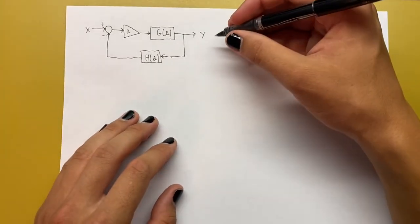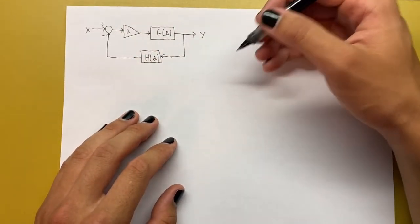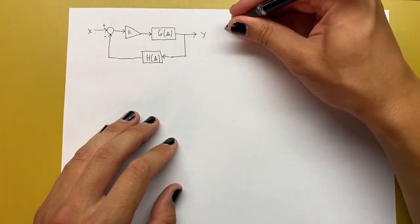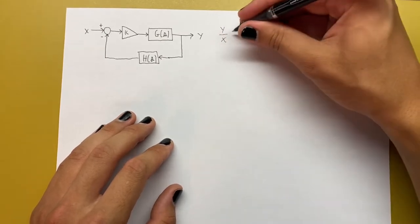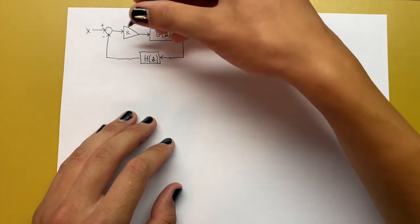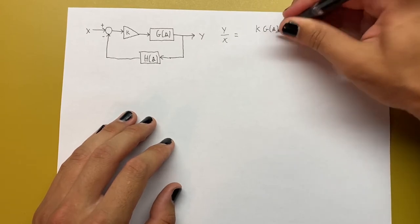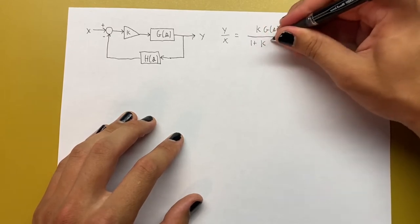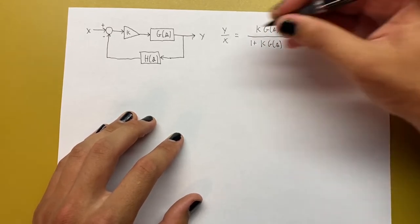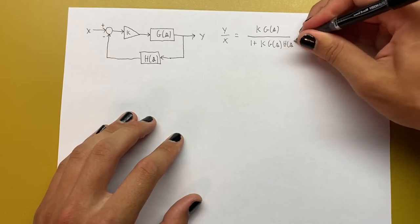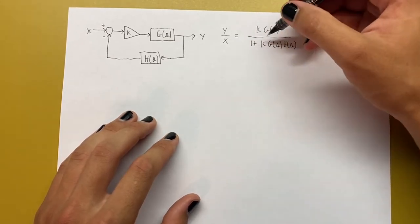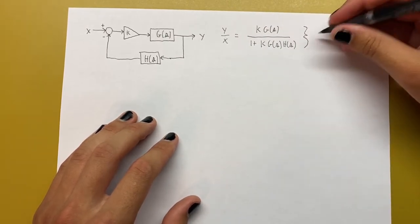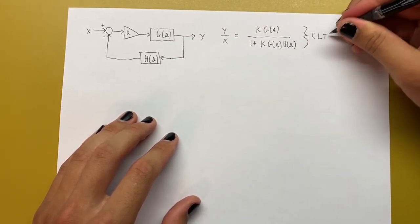You can find the transfer function of this system algebraically, or maybe you just know the rule for feedback systems. It's going to be y over x — output over input — is equal to the feedforward path k g of s, all over 1 plus the feedforward again, k g of s, times the feedback h of s. So this is the transfer function for the whole system, and we call that the closed-loop transfer function, or CLTF for short.